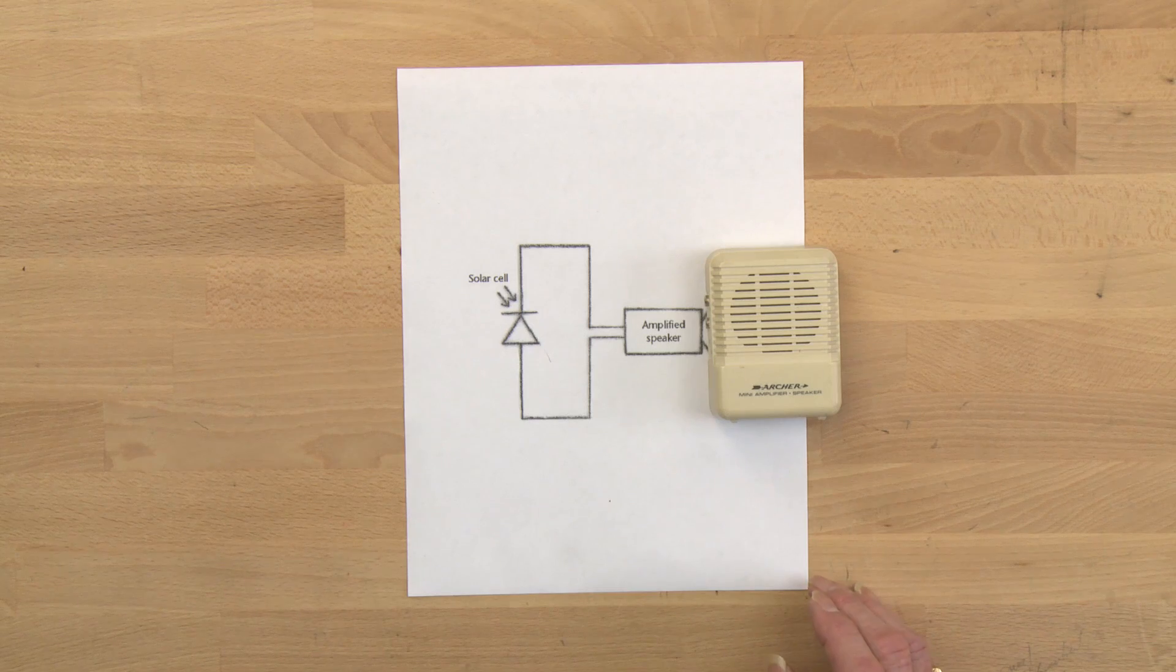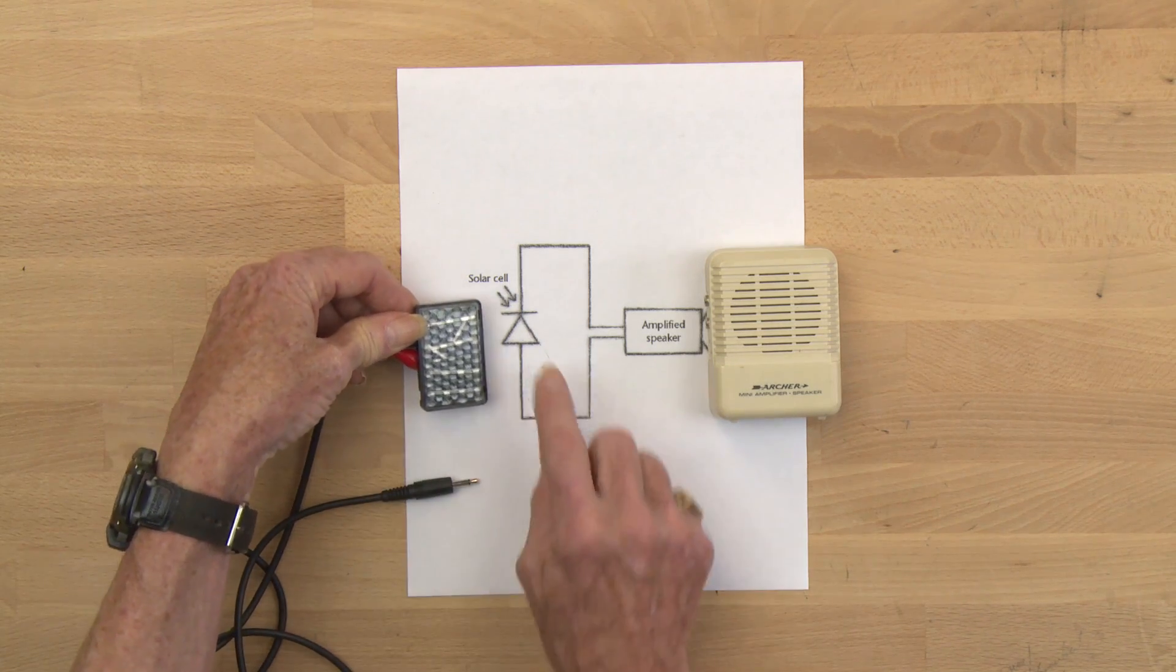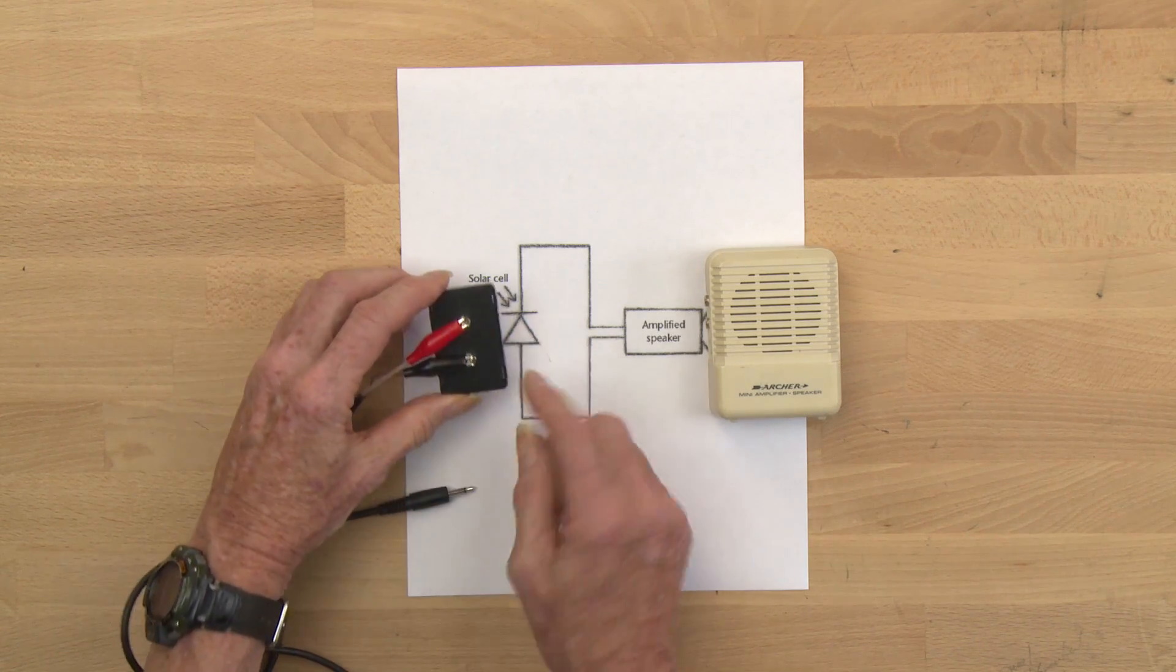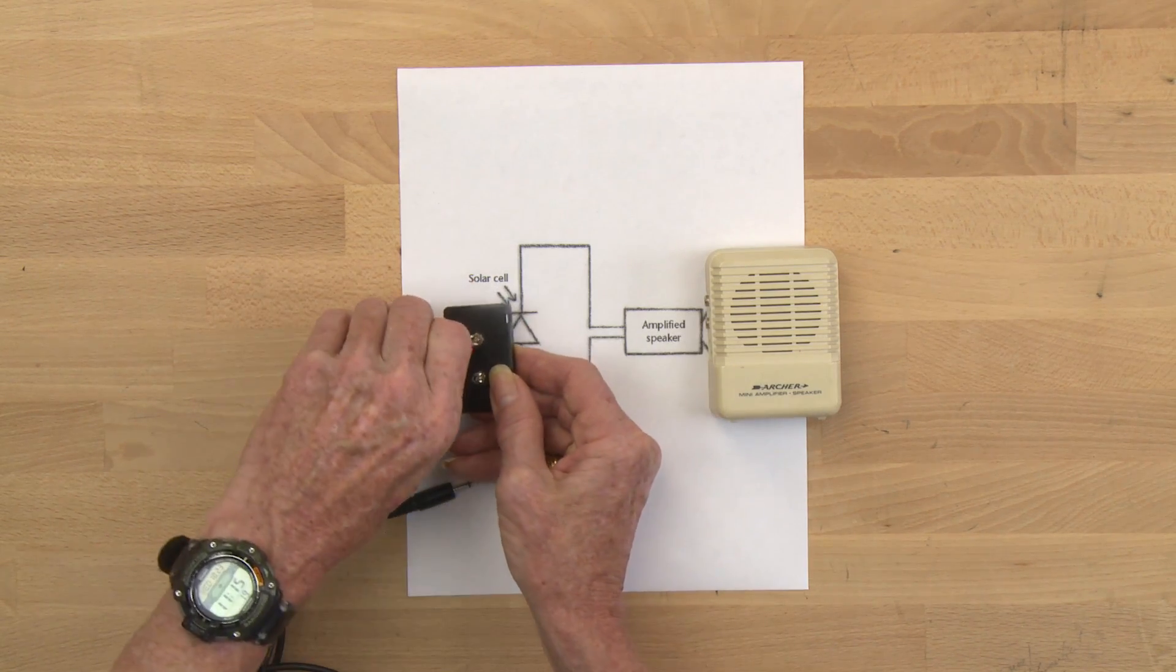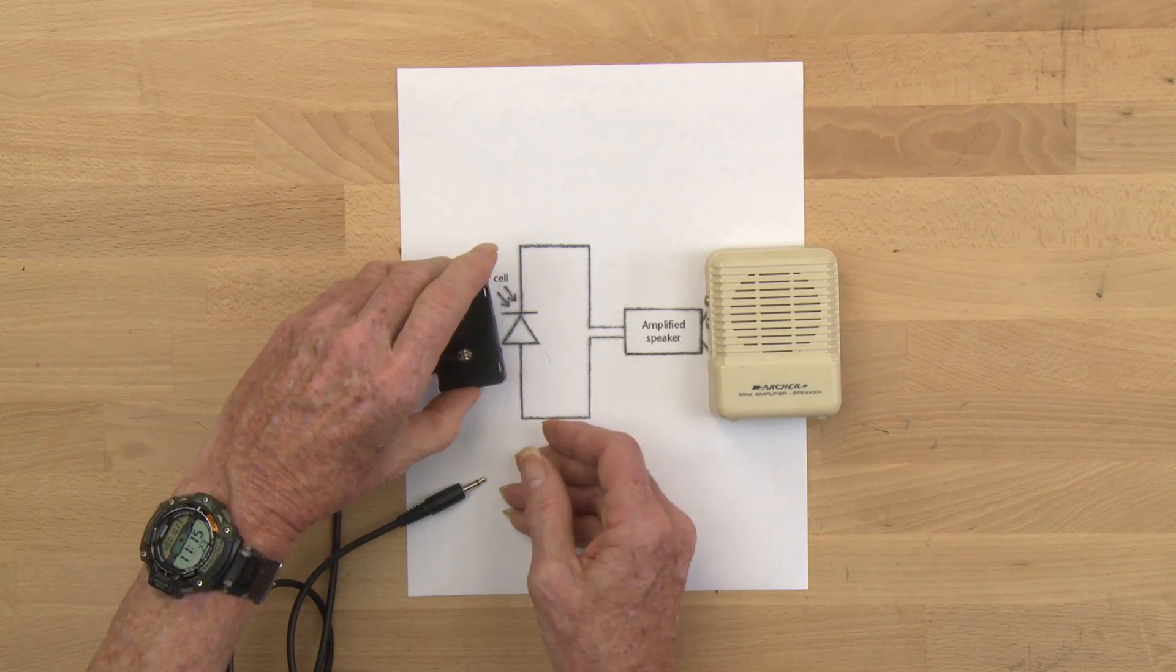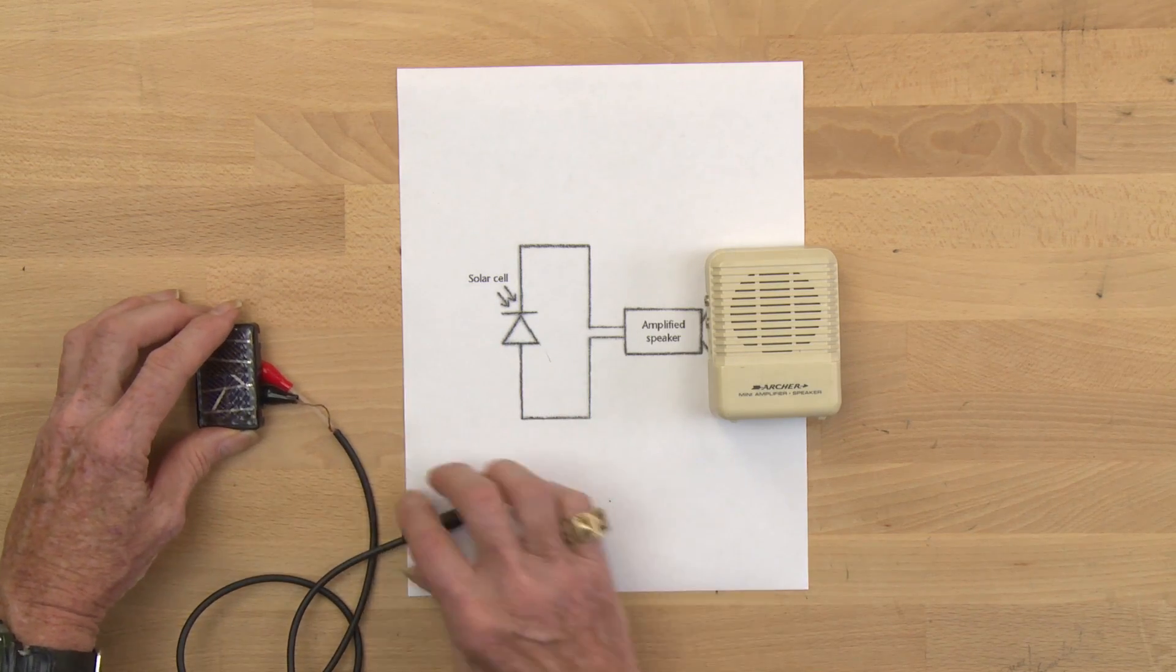I'm going to add to that amplified speaker a solar cell. The solar cell takes light in and converts it to an electrical signal. On the back of the solar cell, there are two leads, and I'm just going to clip the alligator clips to those two leads. It's an alternating current signal, so I don't care which one is connected to which side.